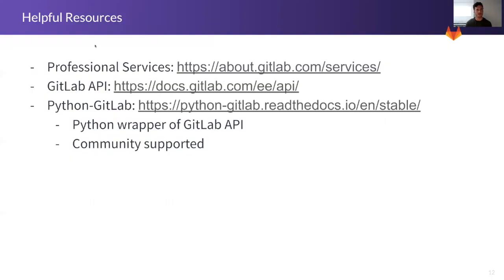Here are a couple of helpful resources. First, if you have a high complexity of groups, projects, or user management, consider using professional services — it will help with successfully setting up your GitLab.com group. I've also listed the GitLab API, which has all the references and parameters if you're looking to create a migration script. Additionally, the Python GitLab library — a community-supported Python wrapper of the GitLab API — may help with your migration process.